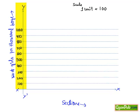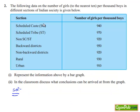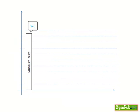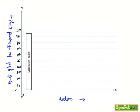Now looking at the question, for SC — that is Scheduled Caste — there were 940 girls per thousand boys. So let's mark it in between 900 and 1000. If we draw a bar for this, we get SC up to 940.